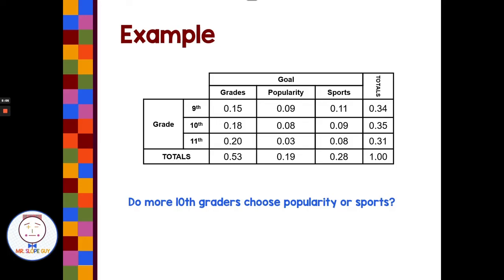So do more 10th graders choose popularity or sports? So 10th graders, not talking about the whole table, it's just talking about this particular row that has to do with 10th graders. And we have popularity and sports. 0.09 or nine hundredths is larger than eight hundredths. So sports was their highest priority.